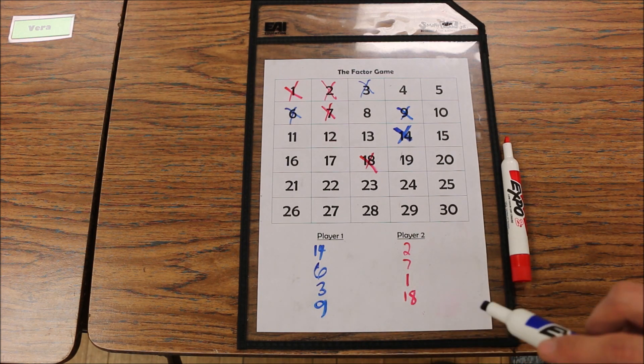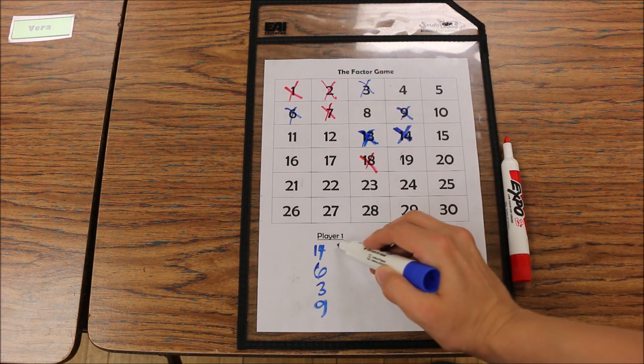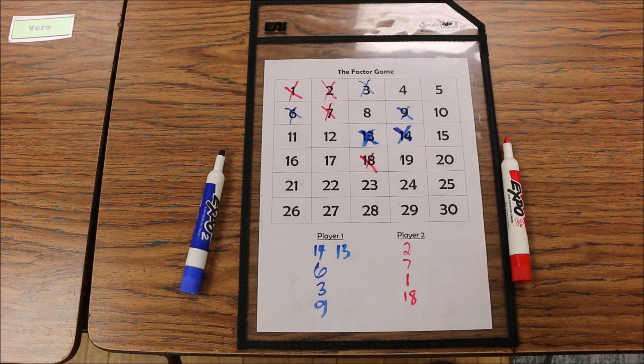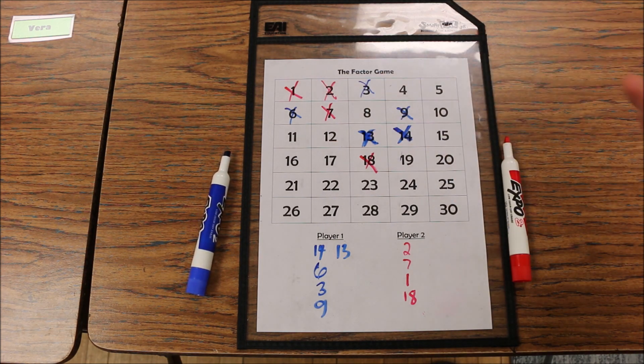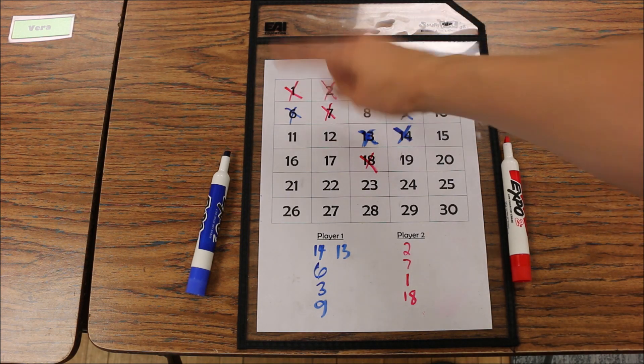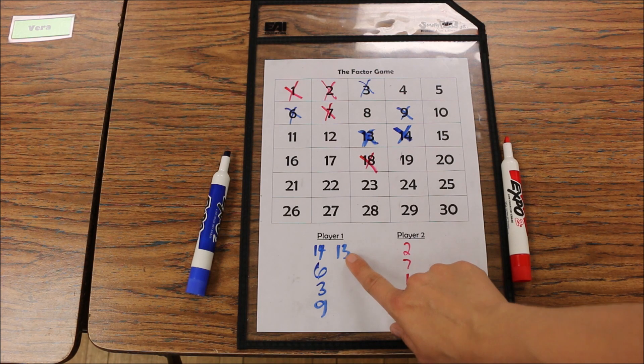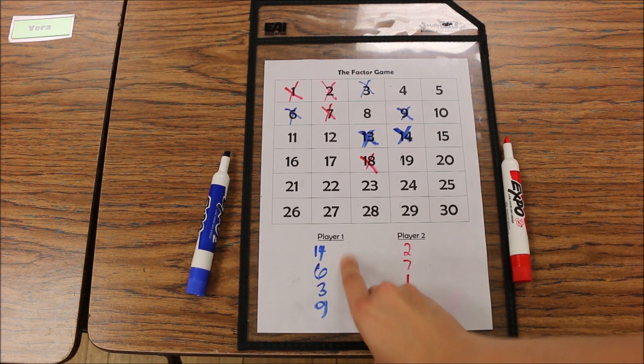Now it would be player 1's turn. If they marked, for example, 13 points and wrote it down, and then player 2 starts to try to find the factors of 13 and realizes 1 and 13 are the only factors of 13. 1 has already been taken. Then you go back to player 1 and they lose their turn and they lose their points because there are no factors left of 13 to mark.